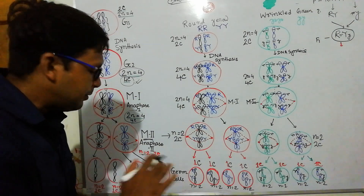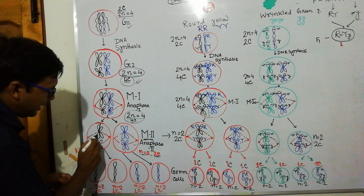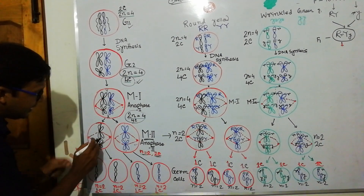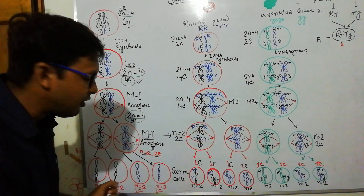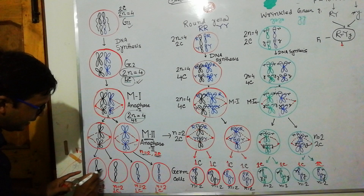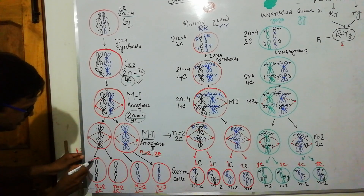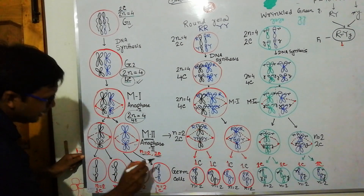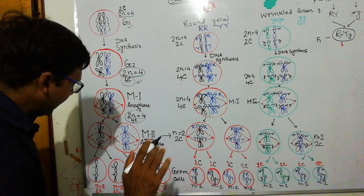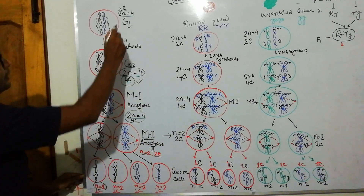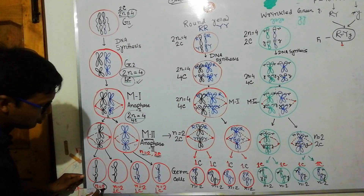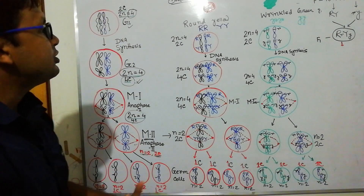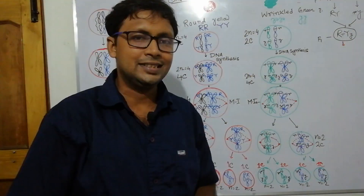Meiosis II then carries on. During anaphase II, the chromosomes align again and microtubules attach to the centromere region, separating the chromatids. The cell divides so that each resulting cell has one chromatid per chromosome. In this way, four gametes are produced, each containing the haploid number of chromosomes (n = 2) and 1c DNA content.